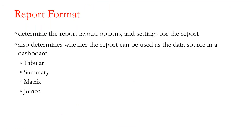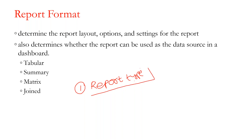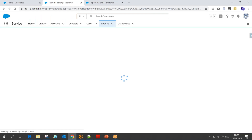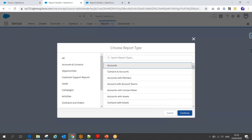Whenever you create a report, the first thing it asks is the report type, which is a very important topic we'll cover in more detail later. Report type simply tells you what kind of data source or what kind of data you want to use for this report. If I open a new report, it asks what report type I want — for example, do I want to run the report on the Account object?